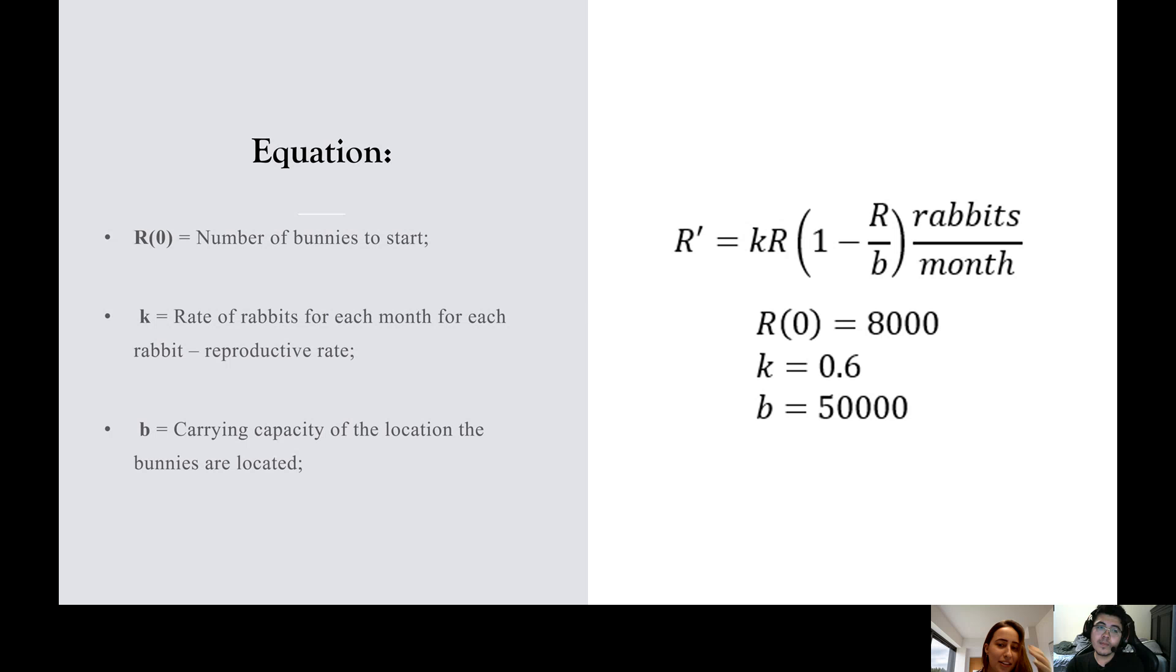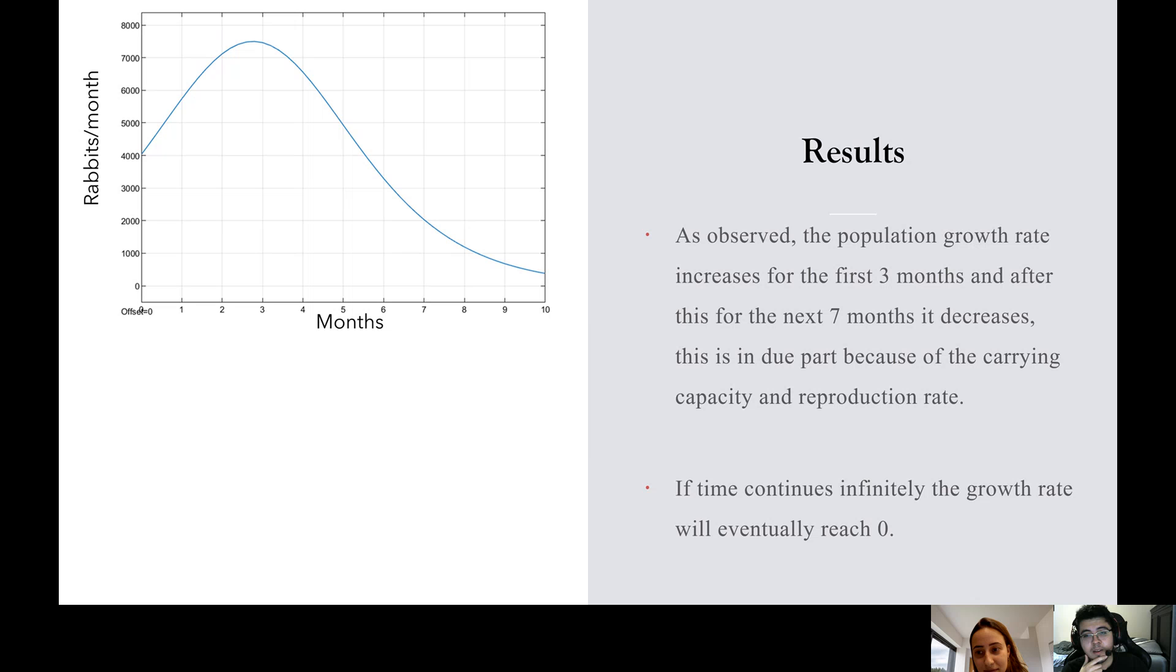The equation here: the r is the number of bunnies to start, the k letter is the rate of rabbits for each month, how many each rabbit will produce, and the letter b, the variable b, is the carrying capacity of the location where the bunnies are located.